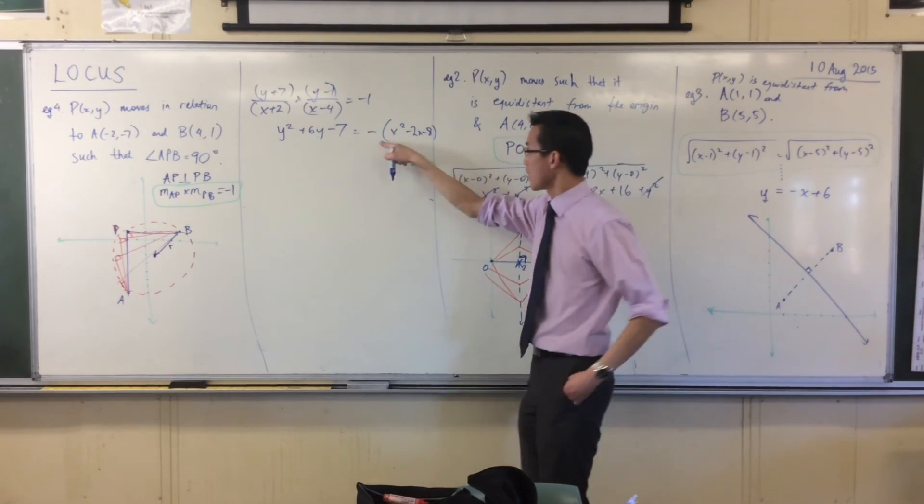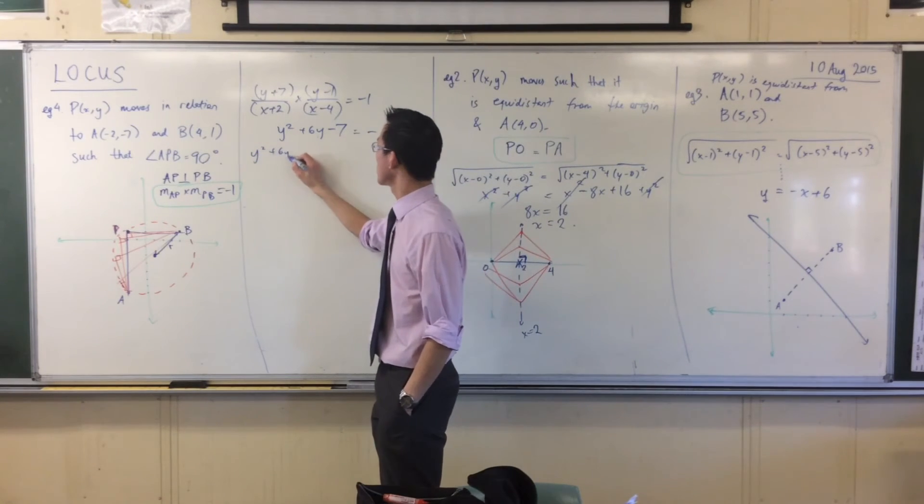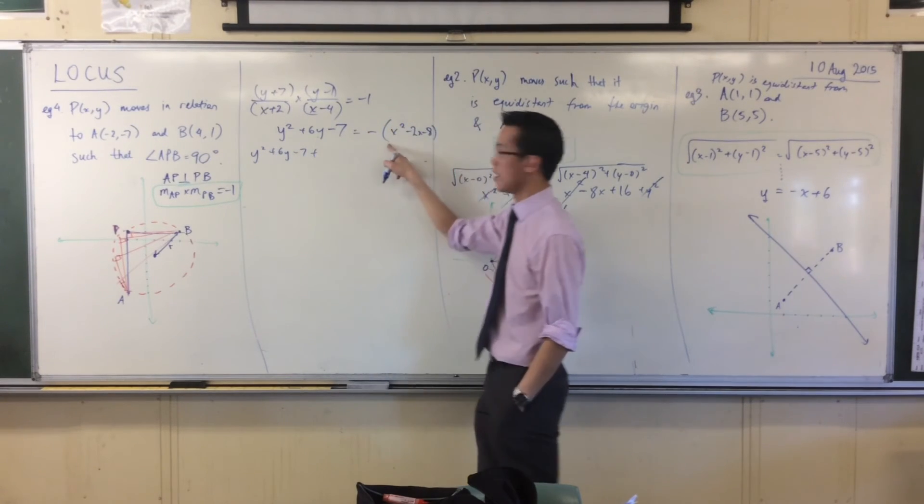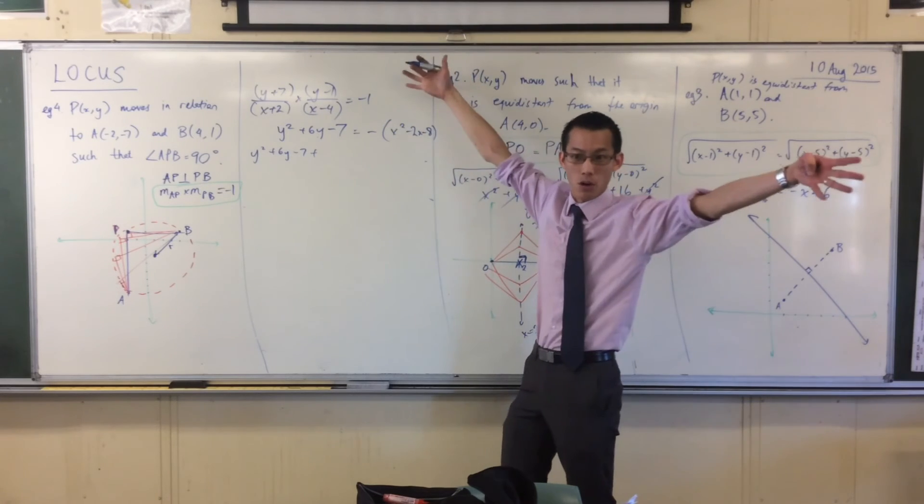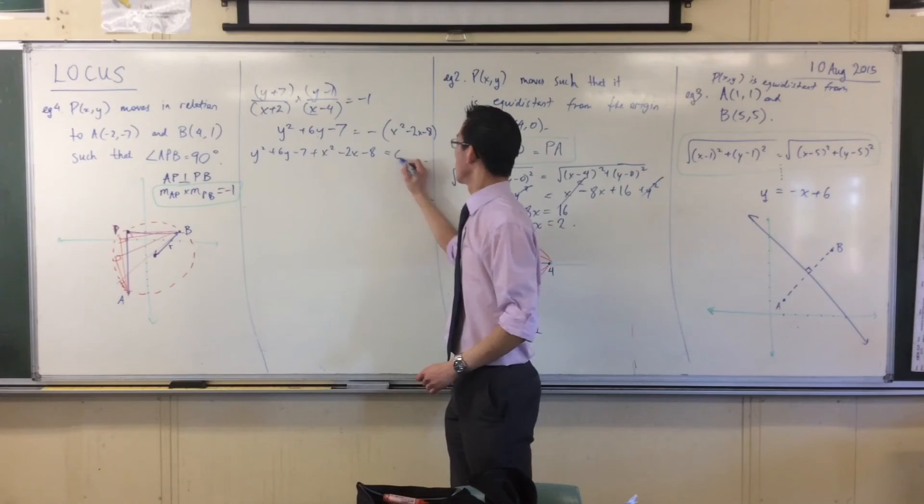So what have I done? I've got these guys on the top, and they become this. I've got these guys on the bottom, and I'll just put them over the other side. Now, because they're negative, I can just add them all over here. So I've got y squared plus 6y minus 7 plus this whole thing, because I've got a minus sign outside the whole piece.